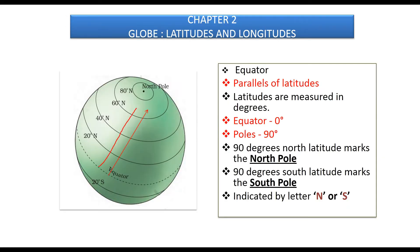All parallel circles from the equator to the poles are known as parallels of latitudes. Latitudes are measured in degrees. All parallels to the north of the equator are known as north latitudes and those to the south are known as south latitudes, denoted by the letters N and S respectively. For example, a place on a particular parallel can be described as being at 20 degrees south latitude.